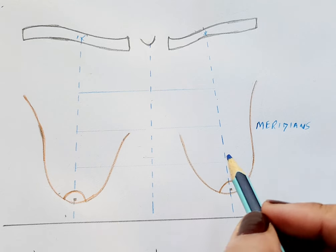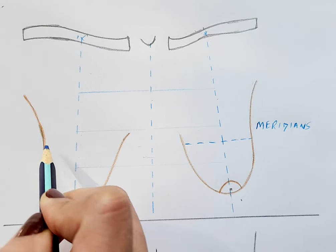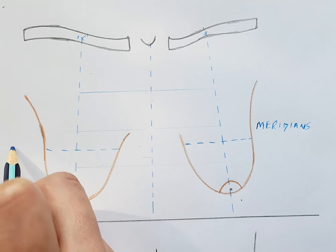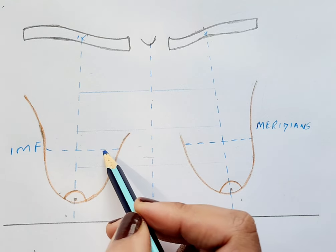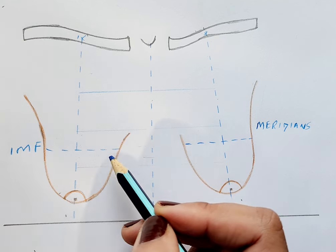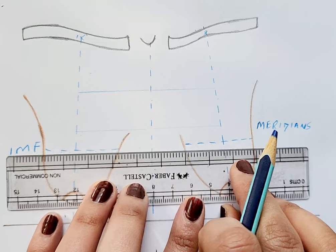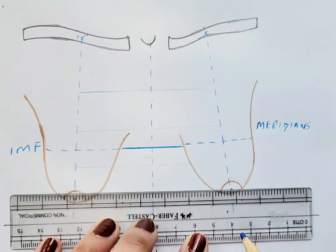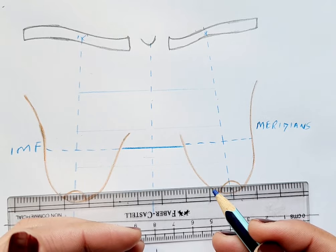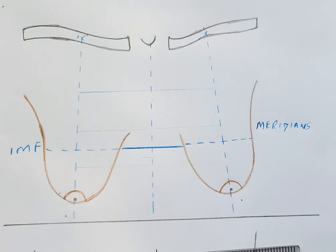Next, mark the inframammary fold (IMF) on both sides. Since the breast lies over the IMF and makes it difficult to visualize during surgery, join the levels of both inframammary folds across the chest wall with an additional marking. This gives you a persistent landmark indicating where the inframammary folds are even when the breasts are in position. These are the standard markings completed before beginning the pedicle and pattern markings.